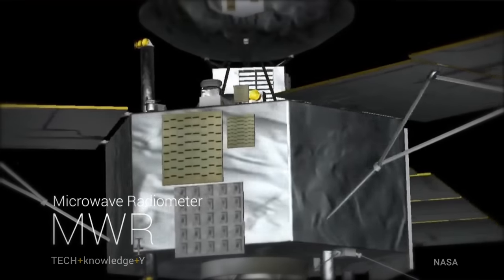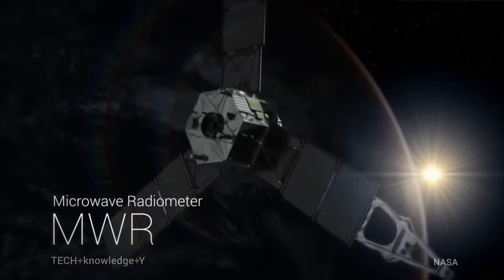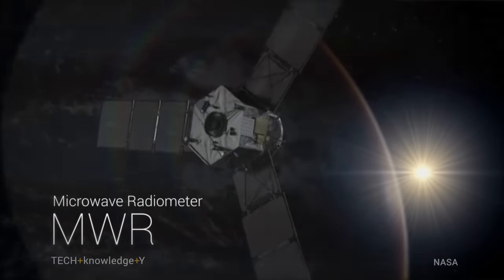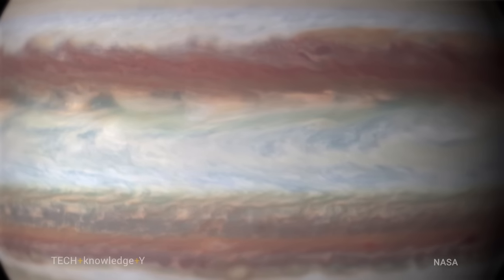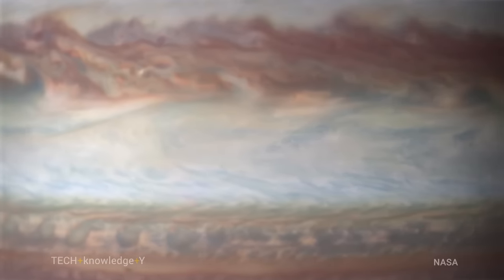This will give us insight into how our solar system formed. I'm involved with an instrument called the microwave radiometer, MWR. It can peer through the clouds. When you see a picture of Jupiter, you see beautiful colored bands and stripes, and you see the clouds.